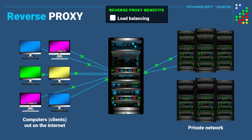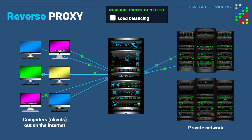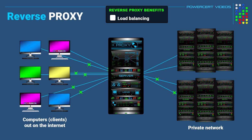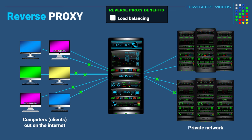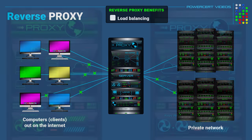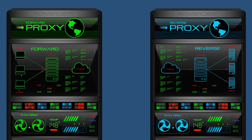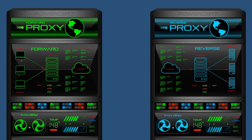Another benefit is load balancing. Most of the time in a network, multiple servers are used to handle incoming traffic, and some servers may get overwhelmed with more traffic than others. A reverse proxy can act like a traffic cop that evenly distributes traffic to multiple servers so that certain servers don't get overloaded. In short, a forward proxy is there to protect clients, while a reverse proxy is there to protect servers.